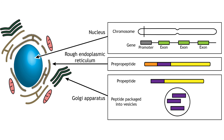The prepropeptide is processed further to the propeptide stage. The remaining processing and packaging of the final neuropeptide into a vesicle occurs in the Golgi apparatus. The peptides are packaged into vesicles that are significantly larger than the vesicles that store the small molecule transmitters. These large vesicles must then move from the soma to the terminal.